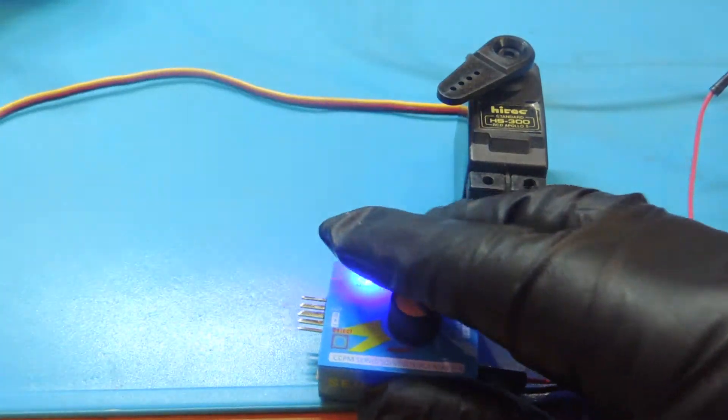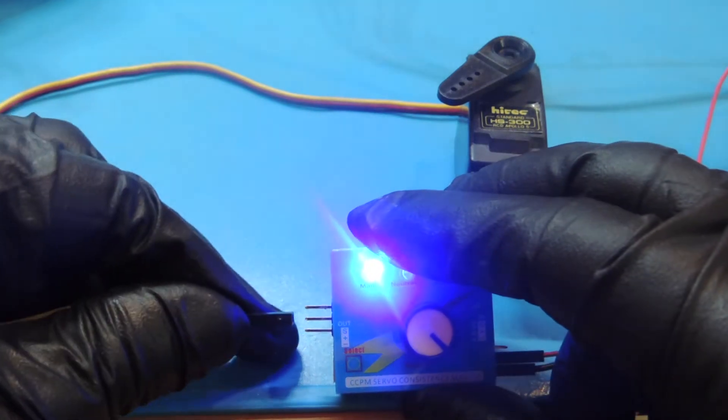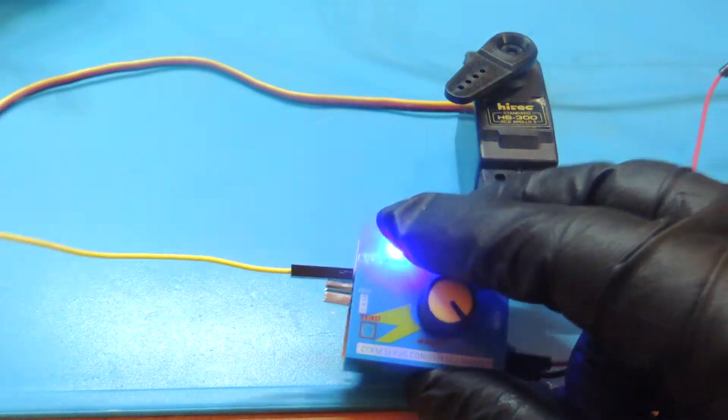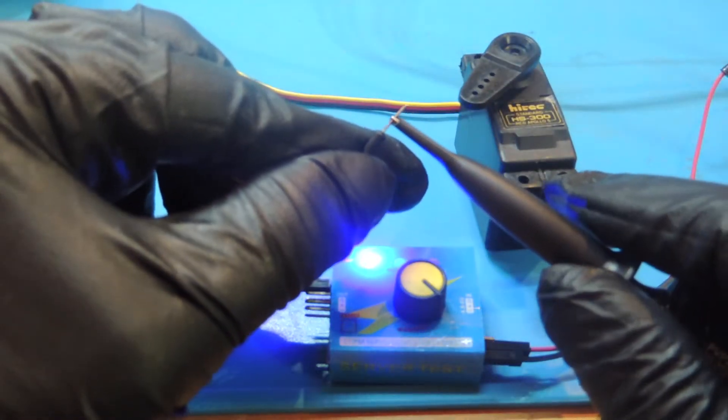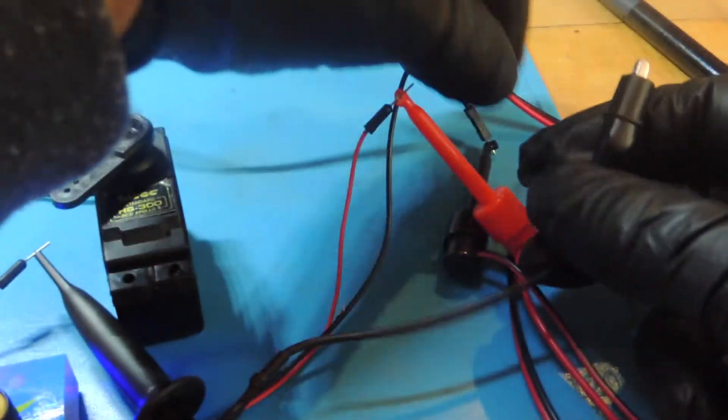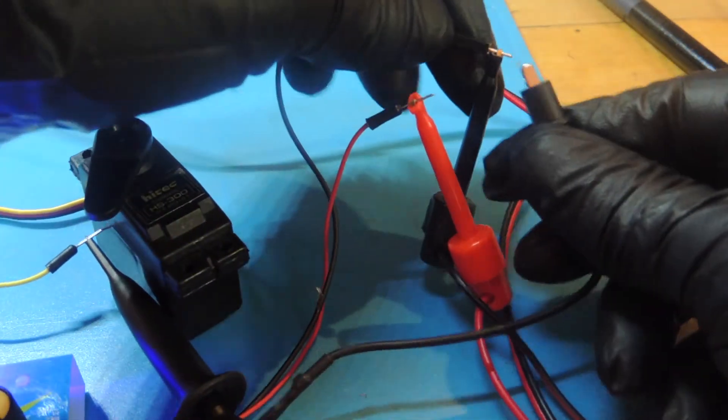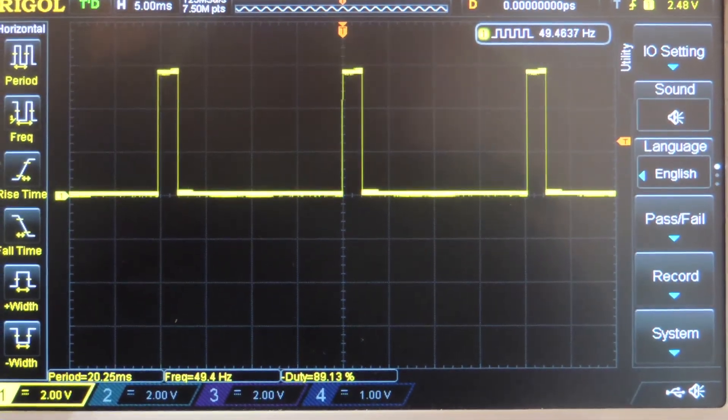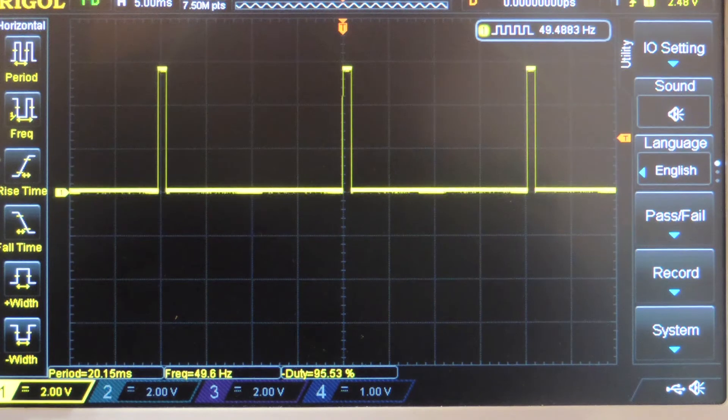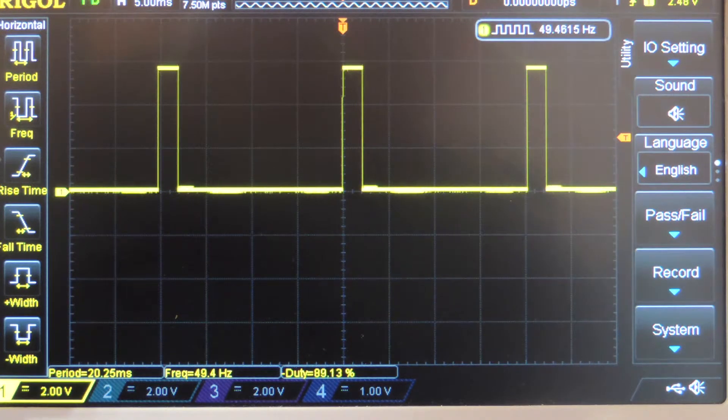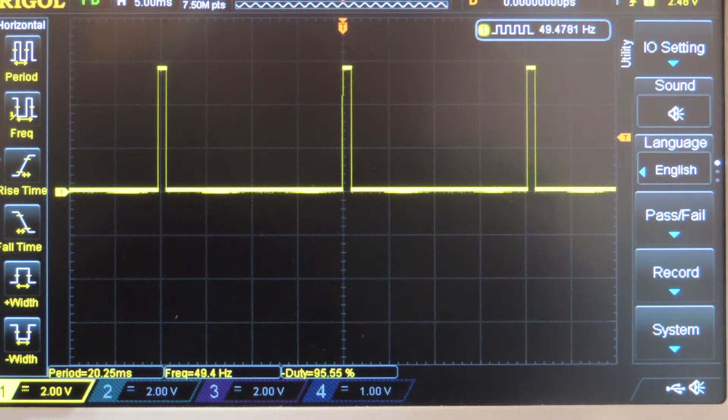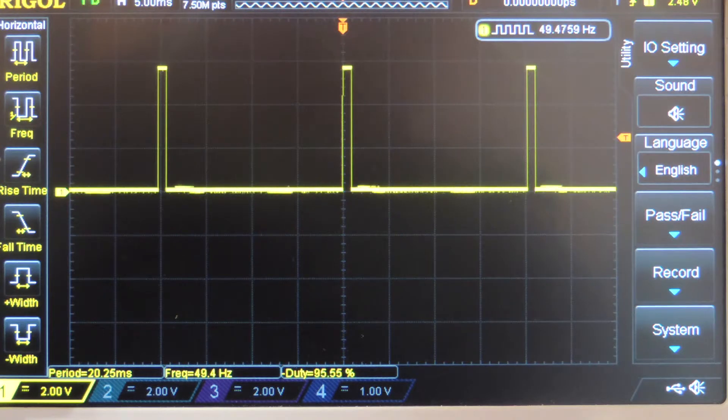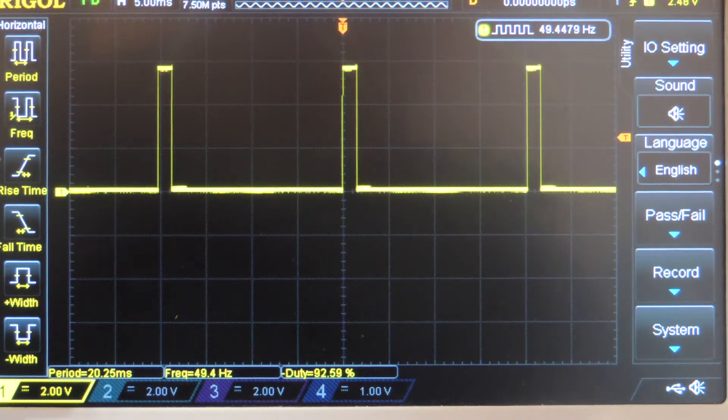Before jumping to the next way to test our servos, let's also analyze the nature of the signal. That's the signal the servo tester is sending to the servo. As the previous one, we have a duty cycle about 90% and a frequency of 50 Hz. So that's the nature of the signal that drives a servo.